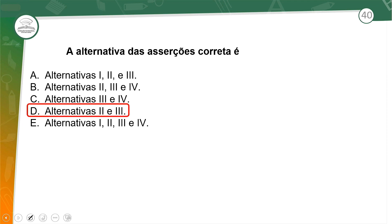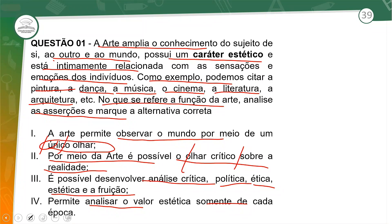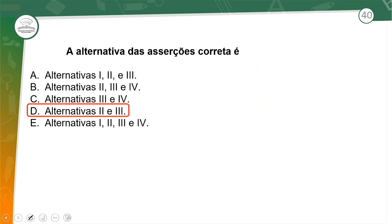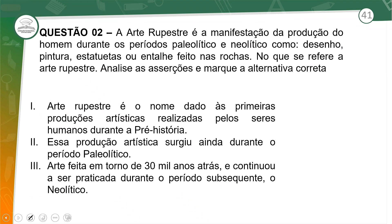Quais dessas estão corretas? Dois e três. Por meio da arte, é possível o olhar crítico sobre a realidade — sim. Tanto o artista tem essa intenção de promover no espectador esse olhar crítico. E três: é possível desenvolver análise crítica, política, ética, estética e fruição. Letra D, parabéns para quem acertou.